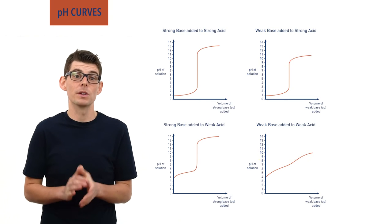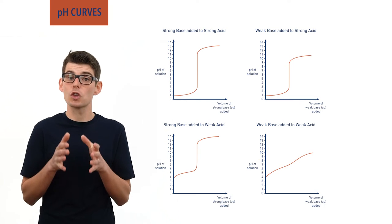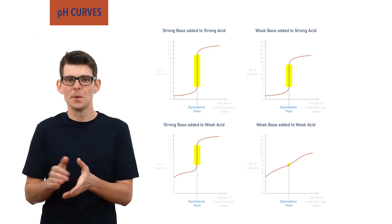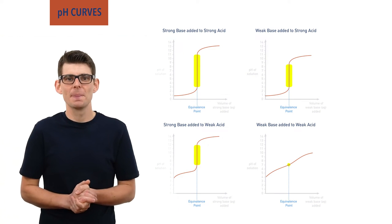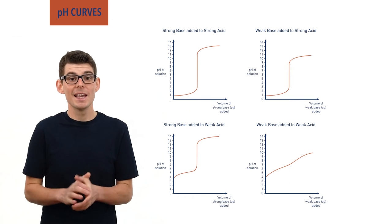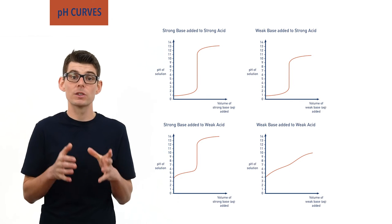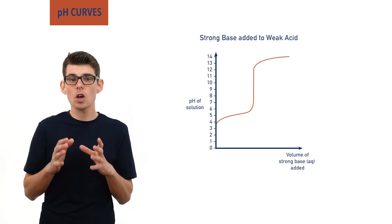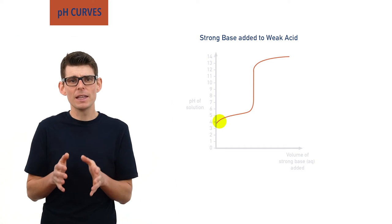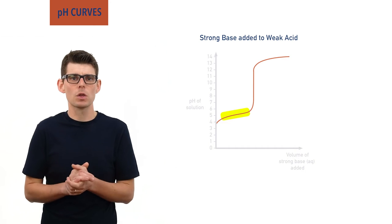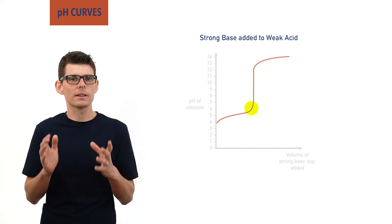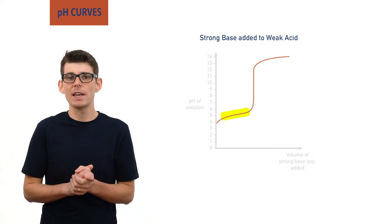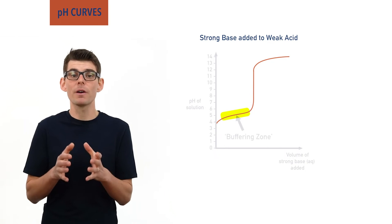The equivalence points of all will be in the middle of the sharp rising pH, with the exception of the weak base to weak acid, which we'll talk about in a minute. One of the most interesting curves to investigate is the addition of a strong base to a weak acid. In this graph, we can see a sharp increase in the pH initially, and then the pH change is very gradual, before it suddenly changes again.